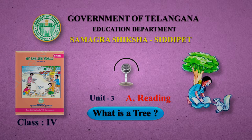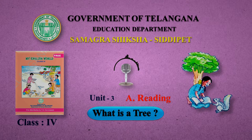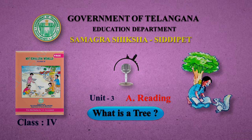They meet a fisherman. Amu: Kakha, what is a tree? Fisherman: It is a boat to carry me across waters. Page 34. Next, Amu and Bittu meet a homemaker.